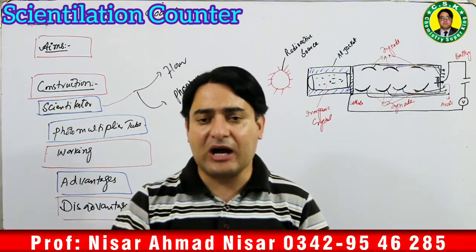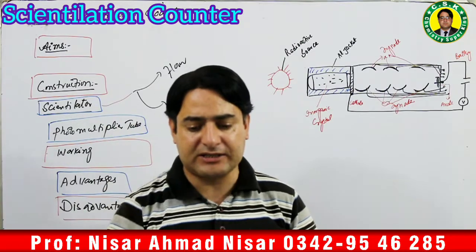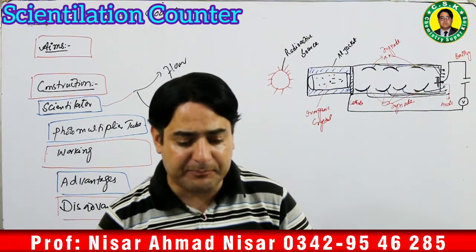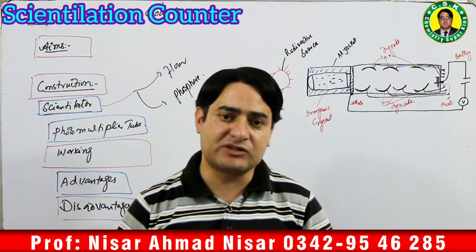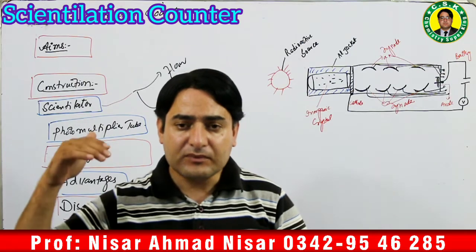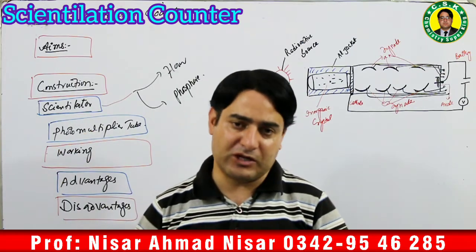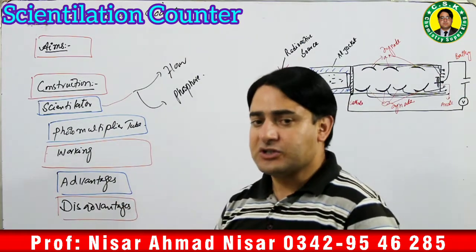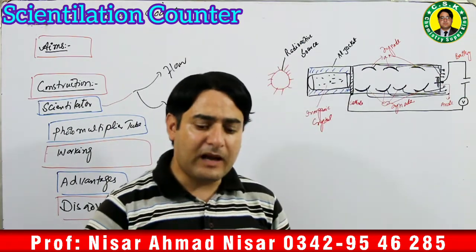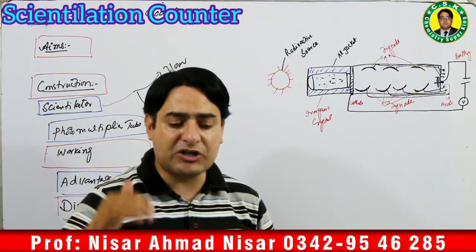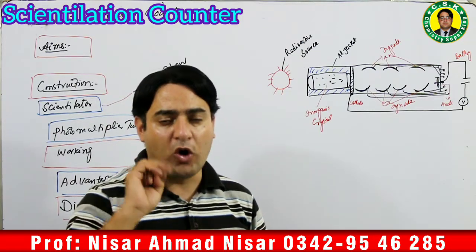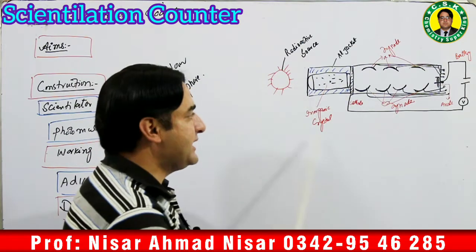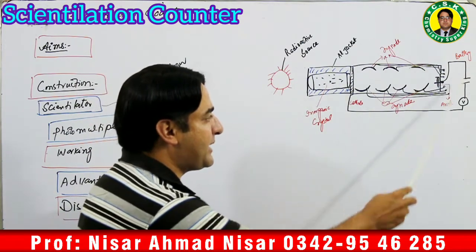Scintillation counters are very good detectors for the detection of gamma rays, as well as beta particles, alpha particles, and protons. Our scintillation counter has two main parts: one is called the scintillator and the other is called the photo multiplier tube.